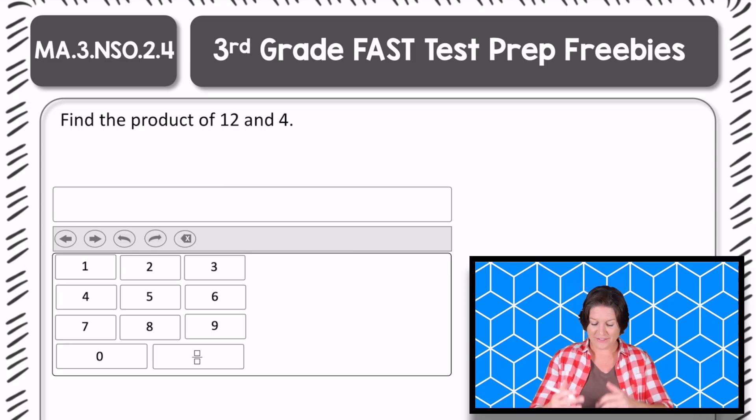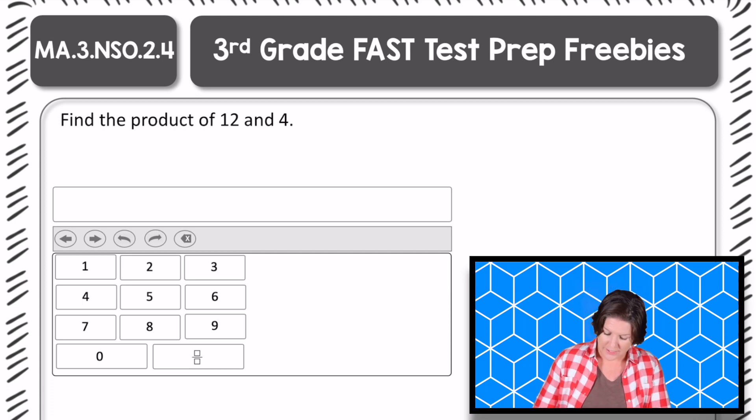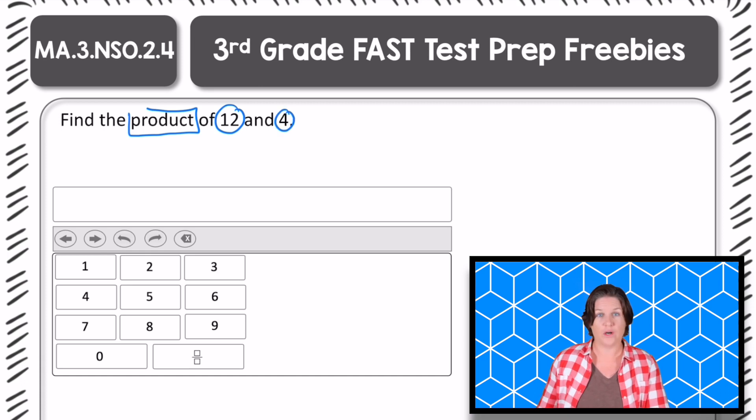All right, awesome. Welcome back. Now let's go ahead and solve it. So it says, find the product of 12 and 4. A relatively simple problem as long as you know what the word product means.